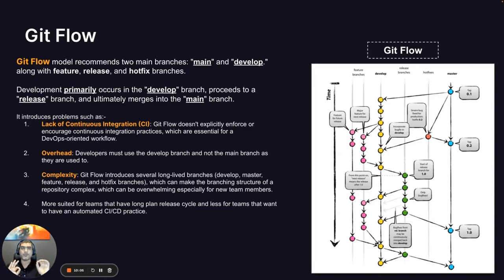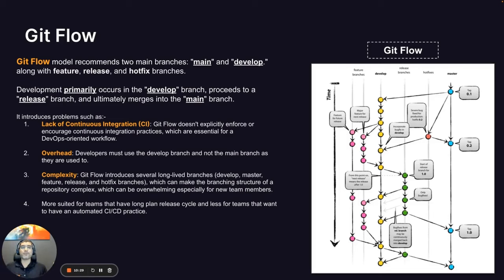The third challenge is complexity. Git Flow introduces several long-lived branches: develop, master, feature, release, and hotfixes. Although feature, release, and hotfix branches are supposed to be short-lived, they can become long-lived depending on the scope of changes. A hotfix on a release branch could diverge significantly from the original develop branch. All of this increases the overhead for merging and the chance of conflicts. Overall, Git Flow is not the best choice for organizations wanting proper CI/CD, but can work for those with strict long-term release cycles—for example, releasing every couple of months.